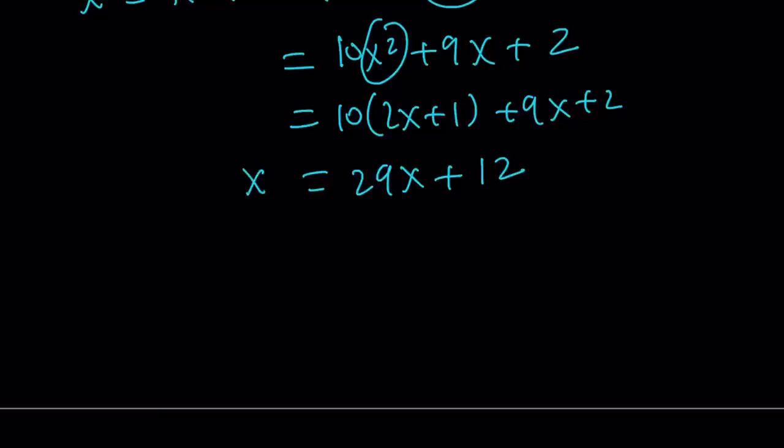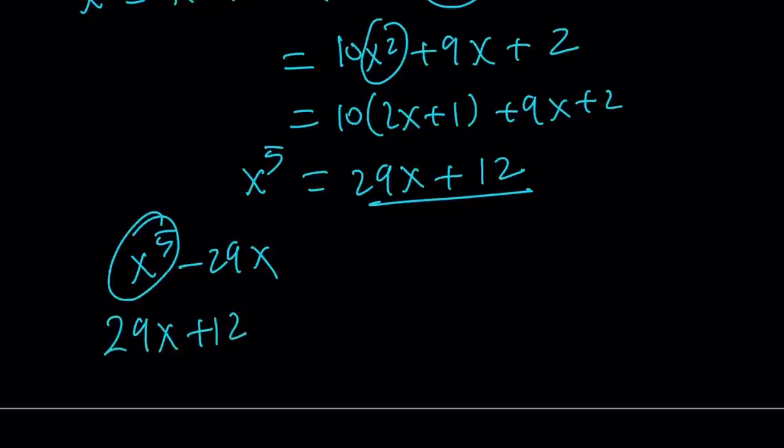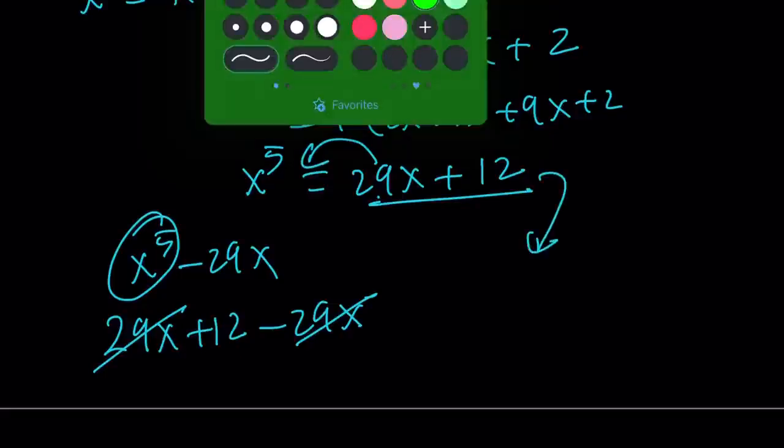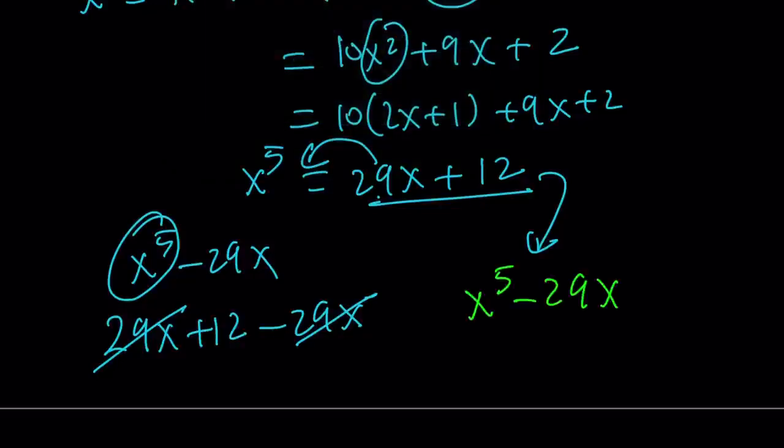But that is for x to the 5th power. And what are we looking for? We are looking for x to the 5th minus 29x. So replace x to the 5th with 29x plus 12, and then minus 29x, they cancel out and you end up with 12 as before. Or just think about it: subtract 29x from both sides, and this will imply x to the 5th minus 29x equals 12. You're just transferring one term from one side to the other. So the answer is 12 again.